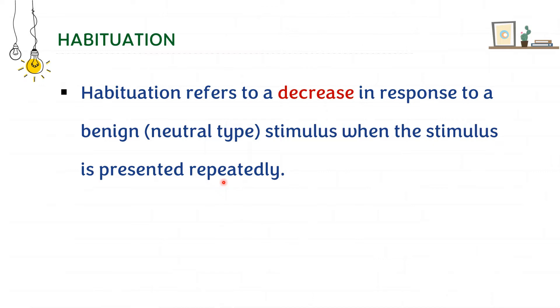Again, you have seen many stray dogs. When stray dogs lie on the road, if you just walk past them they don't move or budge. They are not afraid of us walking beside them or anything. So that is again an example of habituation. There is a decrease in response to that benign stimulus when the stimulus is presented repeatedly.